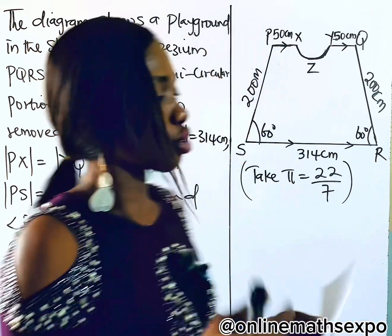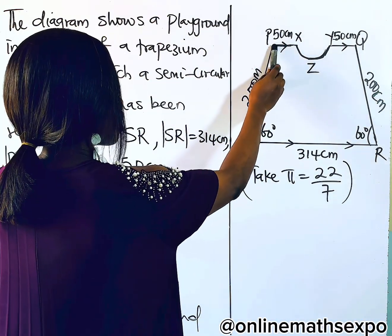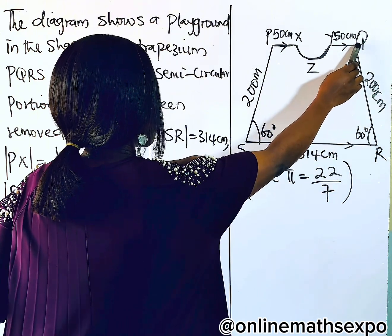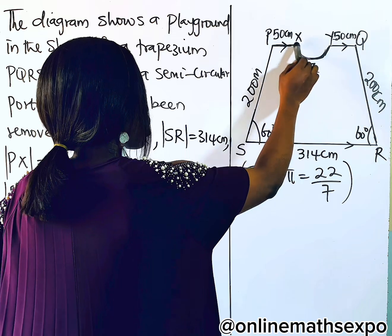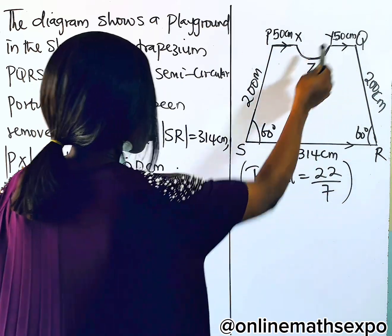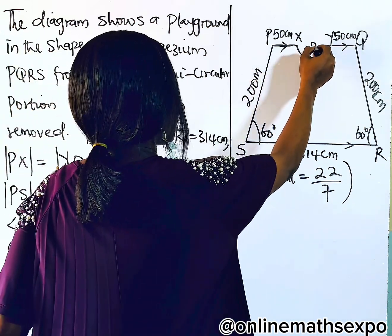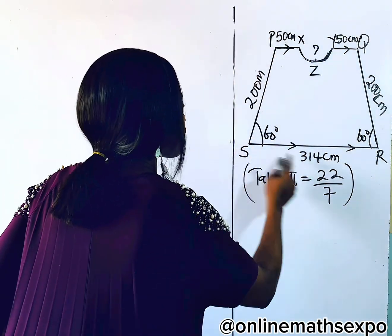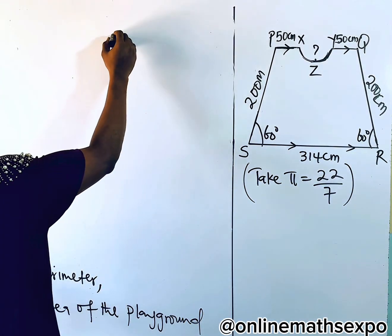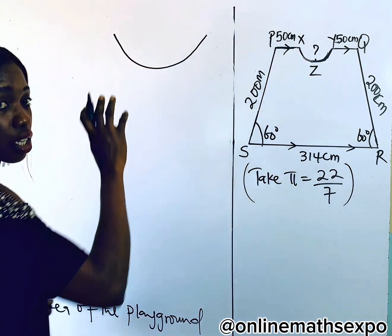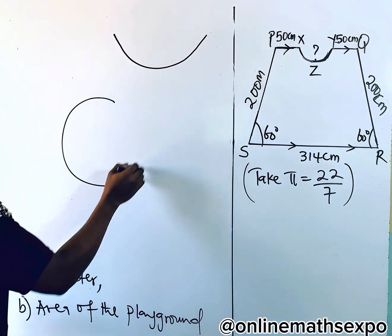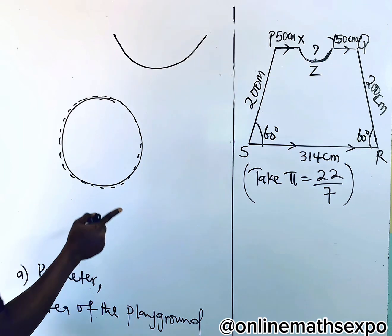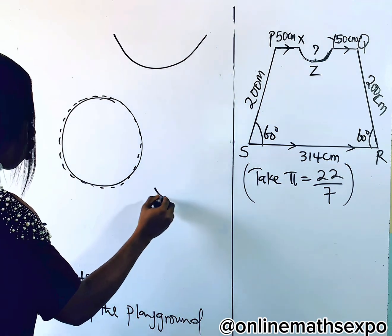How do we calculate this? When you look at this question, from here to here it's given as 50, here to here it's 200, from here to here it's 314, and the other sides are given — but we don't know this particular length. That is what we should find so that we can add it to these ones to get the perimeter. The semicircular portion was taken out. The outer part of a circle is the circumference or perimeter. When you take part of this circumference, it's called an arc.